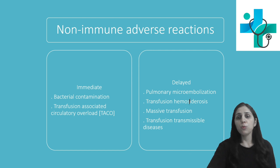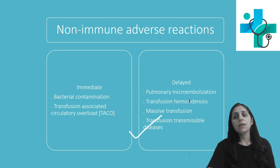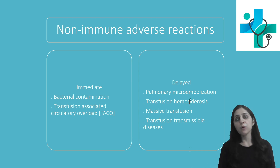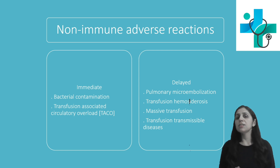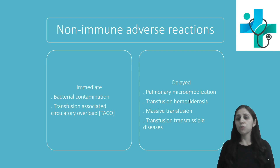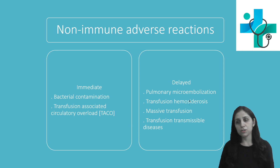The fourth delayed non-immune reaction is transfusion transmissible diseases, including mainly viral, bacterial, or parasitic diseases, which will be discussed in detail in the next video. Thrombophlebitis is also seen if transfusion is done via a vein section in the saphenous vein or at the same site for a longer duration.